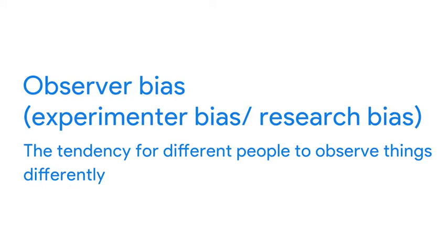Let's start with observer bias, which is sometimes referred to as experimenter bias or research bias. Basically, it's the tendency for different people to observe things differently. You might remember we learned that scientists use observations a lot in their work, like when they're looking at bacteria under a microscope to gather data, while two scientists looking into the same microscope might see different things. That's observer bias.